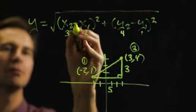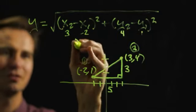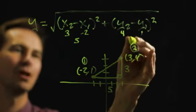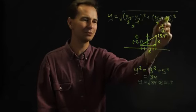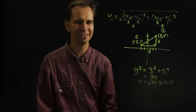So, here we'd have 3 minus negative 2, which would be 5. And here we would have 4 minus 1, which would be 3. So, again, we'd have 5 squared plus 3 squared, which is exactly what we did here.